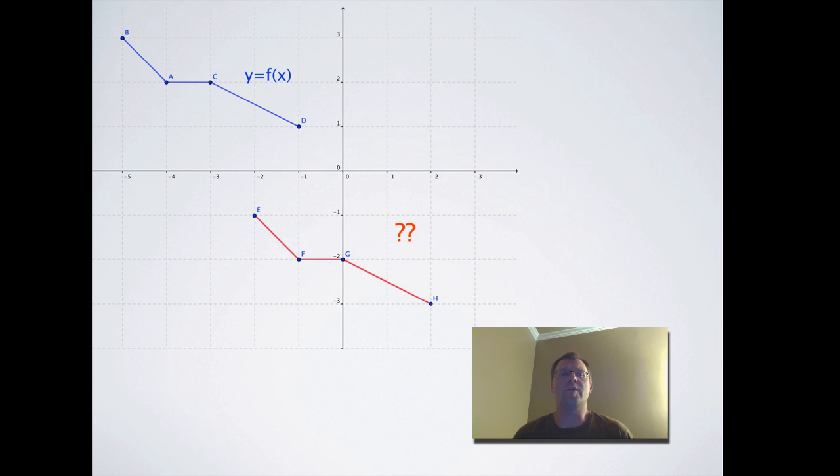So we can see that the point B and the point E are in corresponding positions. So the point B has moved down four full units in order to become point E. So that means we've had a vertical translation of negative four. So that means our function, we could write our new function as f of x minus four.